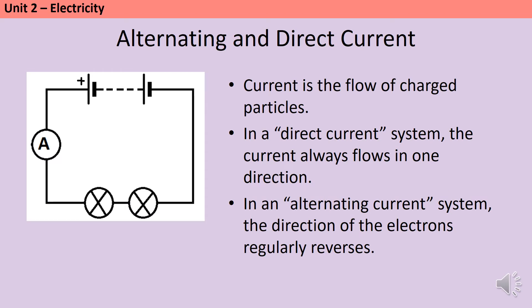Current is the flow of charged particles, and there are two types of current. In a direct current system, the current always flows in one direction, so the electrons are always going the same way. In an alternating current system, the direction of the electrons regularly reverses.